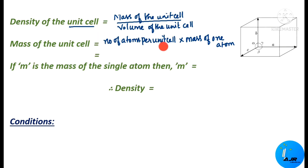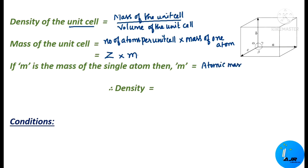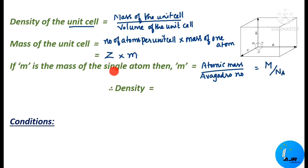We already know the number of atoms present in a unit cell — that is given as Z. But we are in need of the mass of one atom, small m. So how to calculate the mass of one atom? If m is the mass of a single atom, then m can be calculated as: atomic mass divided by Avogadro number. The atomic mass is given by capital M and Avogadro number as capital N suffix A. So if you know the Avogadro number and atomic mass, it is possible to find out the mass of a single atom.